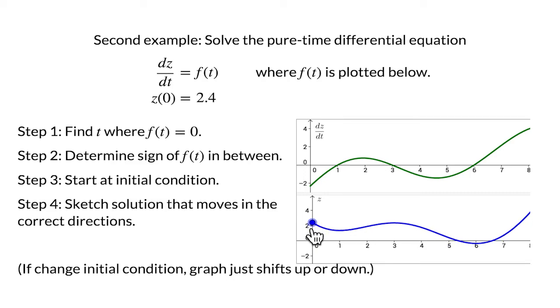Instead, the whole graph of the solutions simply shifts up or down if we change the initial condition, for example, to z(0) equals 3.6. This vertical shifting corresponds to adding or subtracting a constant from the solution, as we'll see more explicitly when we investigate analytic solutions to pure-time differential equations.